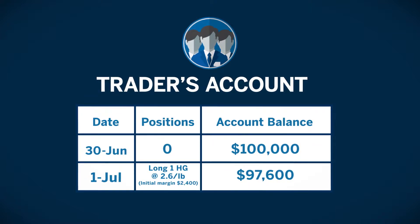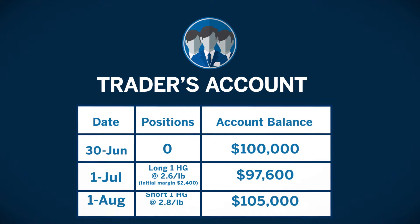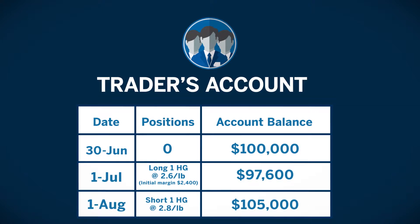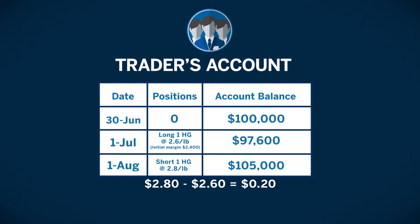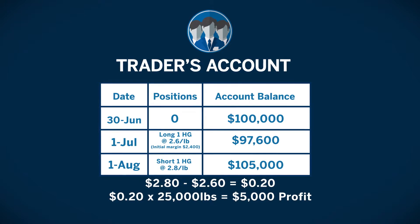On August 1st, the November position is valued at $2.80 per pound. If the trader closed the long position, the profit and loss would be $2.80 minus $2.60 per pound, times $25,000 in a single contract, which would be a gain of $5,000.